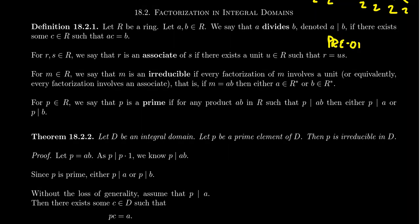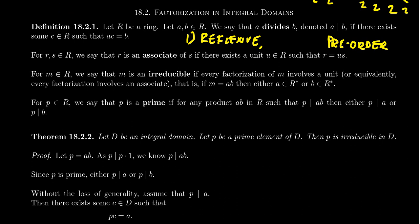This divisibility symbol is going to form what we call in mathematics a pre-order as a relation. A pre-order is kind of like the intersection between partial orders and equivalence relations. A pre-order is going to be something that's first of all reflexive. Divisibility is reflexive because you have unity — in particular, A divides A because A can be factored as A times 1. That's one of the reasons why we need to have unity inside our rings. We also have that divisibility is going to be transitive: if A divides B and B divides C, then we can infer that A divides C.